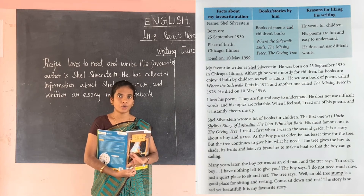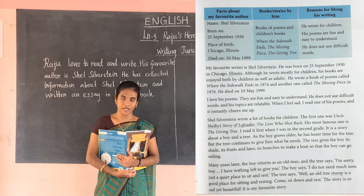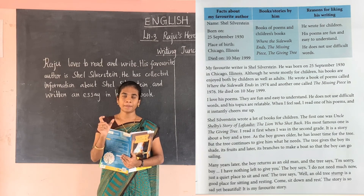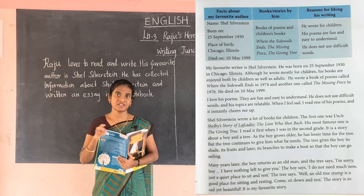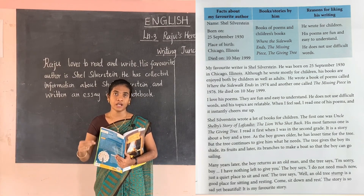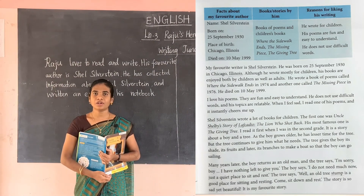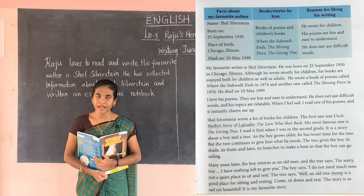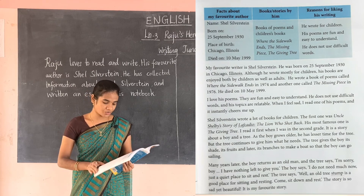The boy said, 'Don't worry, I don't need anything — just a quiet place to sit and rest.' A stump means the bottom part of the tree trunk left in the ground after the tree is cut — in Tamil we say it like a half-cut tree left in the ground. The old tree stump is a good place to sit and rest. This is one of the beautiful and sad stories, and it was liked by Raju.